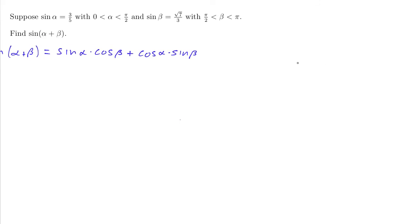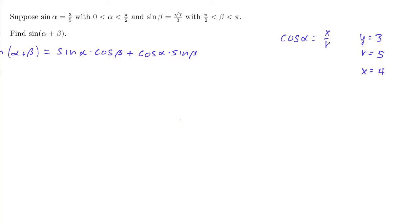We know how to do that, so let me just do a little side work here. I want to figure out what cosine of alpha is equal to. That's going to be x over r. In this case, sine of alpha is 3 fifths, so y is 3 and r is 5, and x must therefore be plus or minus 4 because this makes a 3-4-5 triangle. Because alpha is between 0 and pi over 2, x is positive, so cosine of alpha equals 4 fifths.